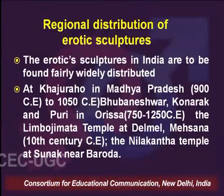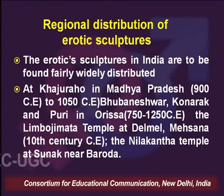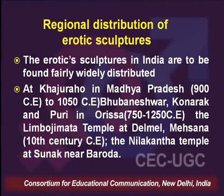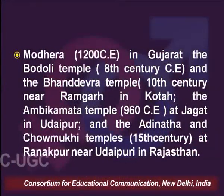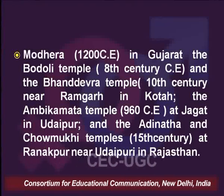Coming to the regional distribution of these erotic sculptures — this gives an idea of how this was not a localized phenomenon but fairly widespread. At Khajuraho in Madhya Pradesh, temples date from 900 to almost 1050 CE. Other important regions include Bhubaneshwar, Konark, and Puri in Orissa; Limboji Mata temple at Delmel; Mehsana dated 10th century; the Nilkantha temple at Sunak near Baroda; the Modera temple in Gujarat dated 1200; Bhandevra temple near Ramgad in Kota; and a number of Ranakpur temples near Udaypuri in Rajasthan, dated 14th and 15th centuries.